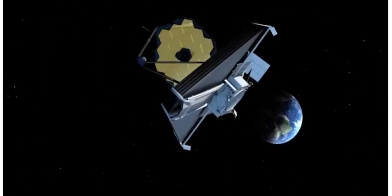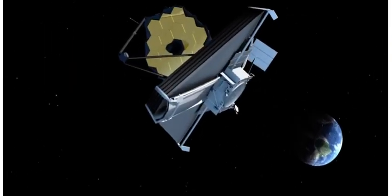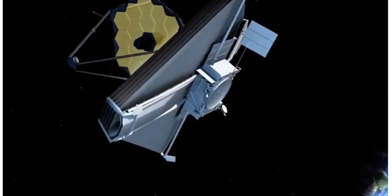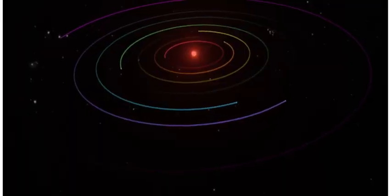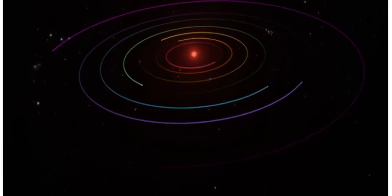Upcoming missions like the James Webb Space Telescope will study the TRAPPIST-1 system in greater detail and uncover more clues about the atmospheres and compositions of these seven Earth-sized worlds.